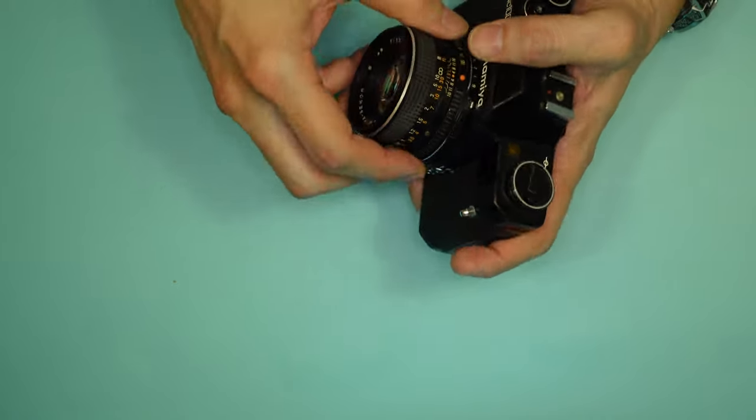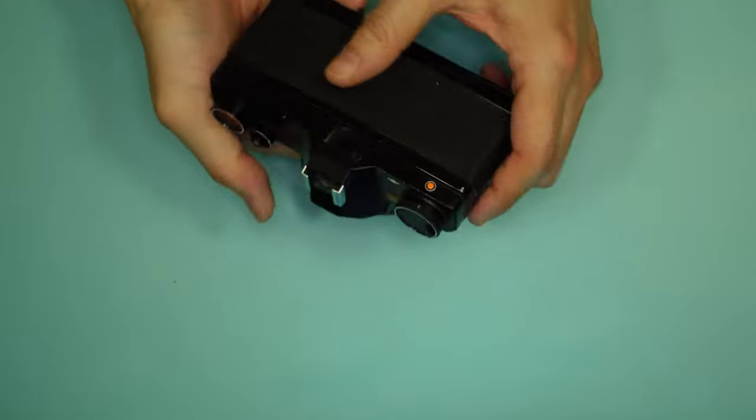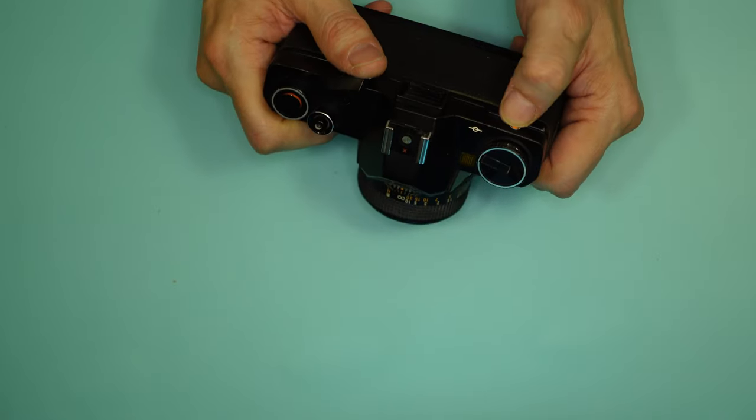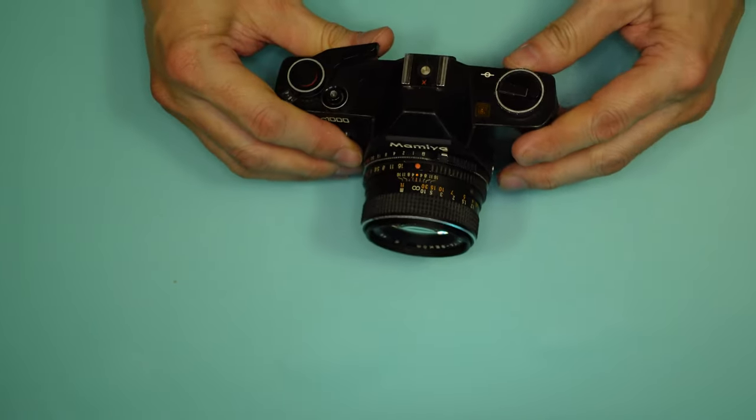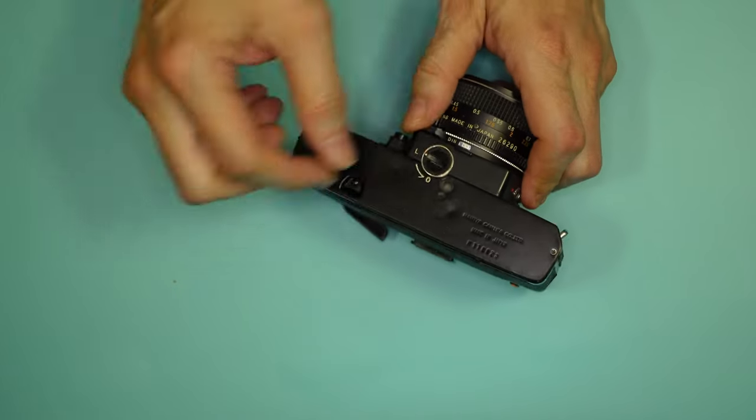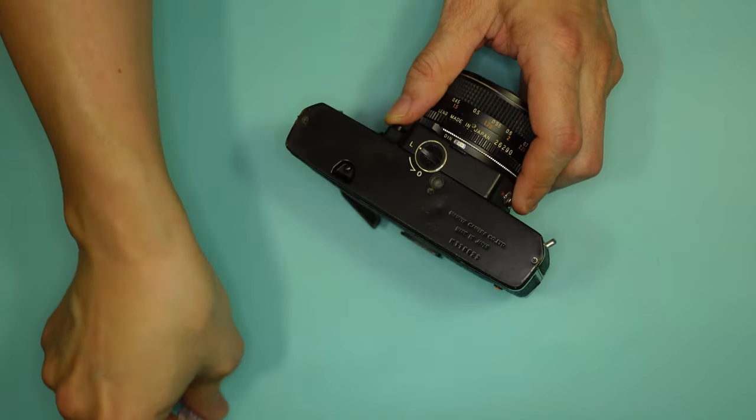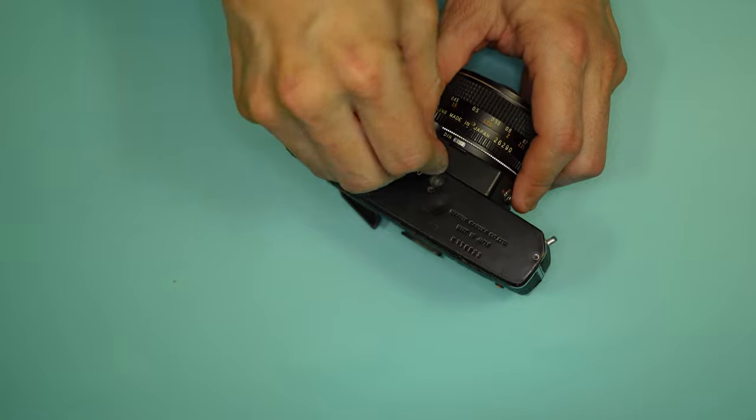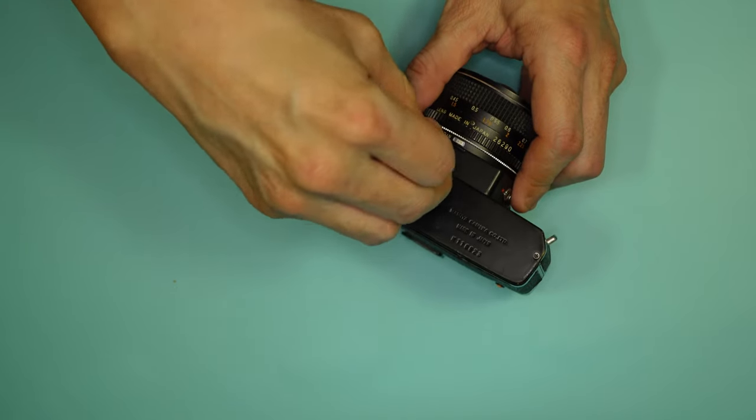This looks to be an all-manual camera, but I haven't looked through the viewfinder. There's, that obviously is a battery check. Not sure what kind of battery it takes. Something big? Maybe a couple button cells? Take a quick look.